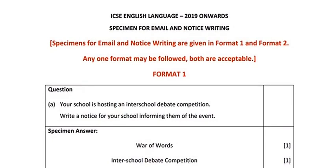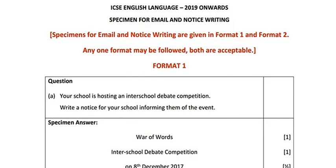On your screen you can see the ICSE English Language 2019 onwards specimen for email and notice writing. Printed in red ink, it states: specimens for email and notice writing are given in Format 1 and Format 2 — any one format may be followed, both are acceptable. The council is saying that there are two different types of formats, but you can make use of any one of the two that you are comfortable with. Notice carries 5 marks and email also carries 5 marks, and those 5 marks are distributed as shown. Let's look at Format 1.